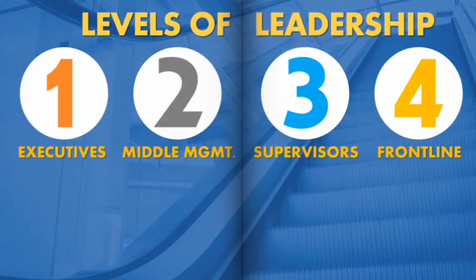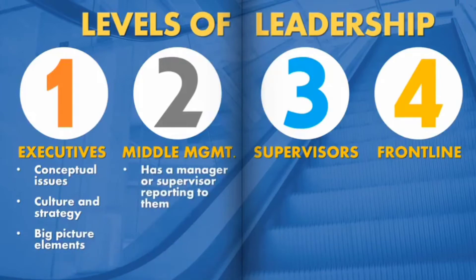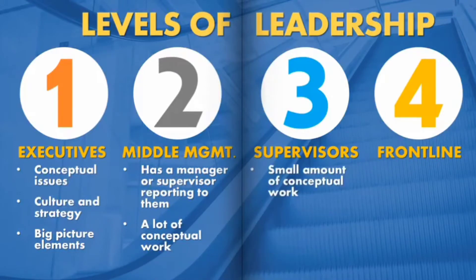When you look at the traditional duties of the various levels in an organization, you see that a certain part of the job is conceptual. For top management, a lot of their day is spent on conceptual issues like culture and strategy — the big picture elements. A middle manager is someone who has a manager or supervisor reporting to them, and they still have a significant part of conceptual work to do. Supervisors have a little bit of conceptual work, but not a lot, while the front line is getting the technical work done.